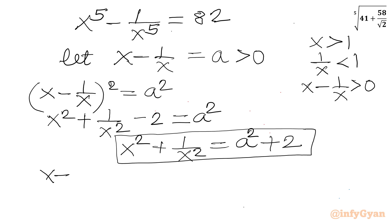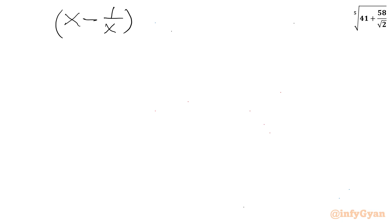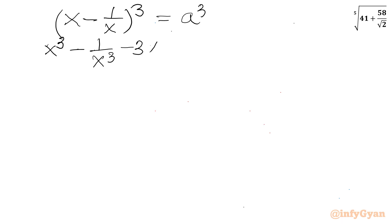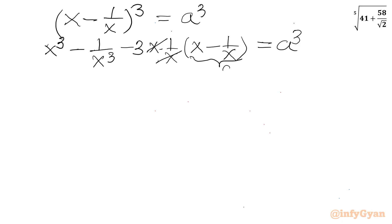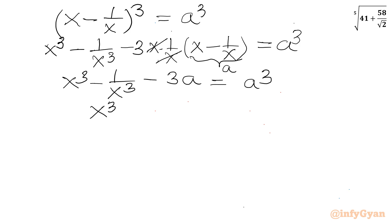Now I will consider cubing the same equation: x minus 1 over x whole cube equals a cube. Applying the a minus b whole cube formula: x cube minus 1 over x cube minus 3 times x times 1 over x times x minus 1 over x equals a cube. The x times 1 over x cancels, and x minus 1 over x is a, so x cube minus 1 over x cube minus 3a equals a cube. Adding 3a to both sides gives x cube minus 1 over x cube equals a cube plus 3a.